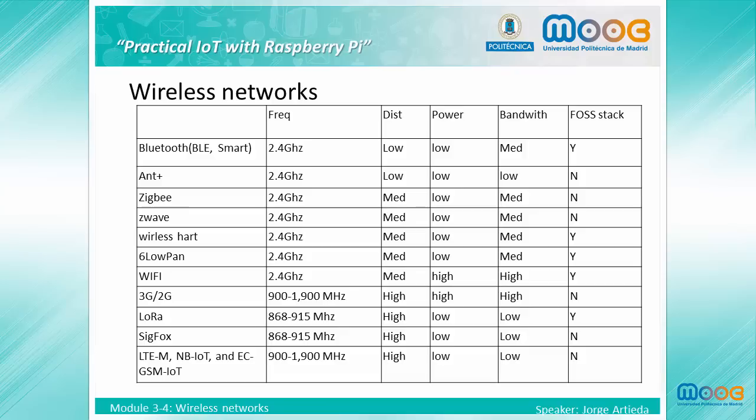Wireless HART is an extension of the HART protocol, which is a very popular protocol in industrial applications. 6LoWPAN is the open source hope for the IoT, but it relies on TCP/IP version 6 and this protocol has very low penetration. Wi-Fi is usually discarded as an IoT protocol, but the chips have reduced a lot of their cost and energy consumption, making them a very serious competition in this context.